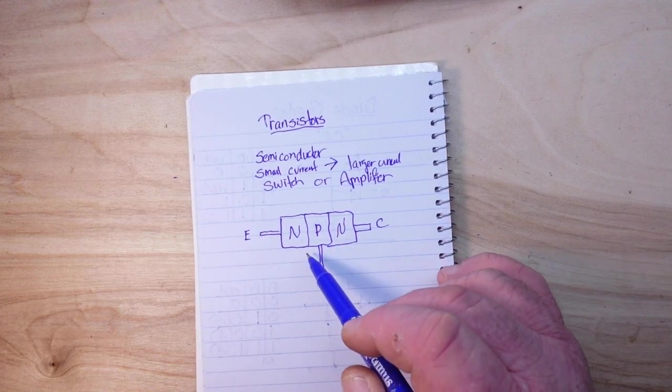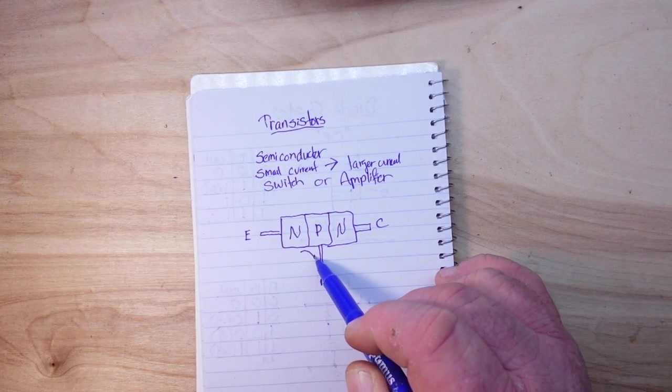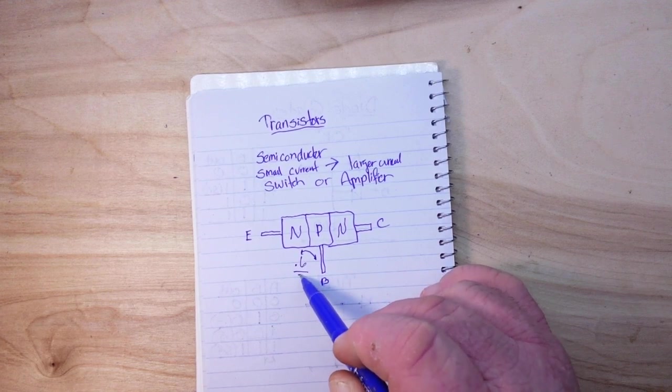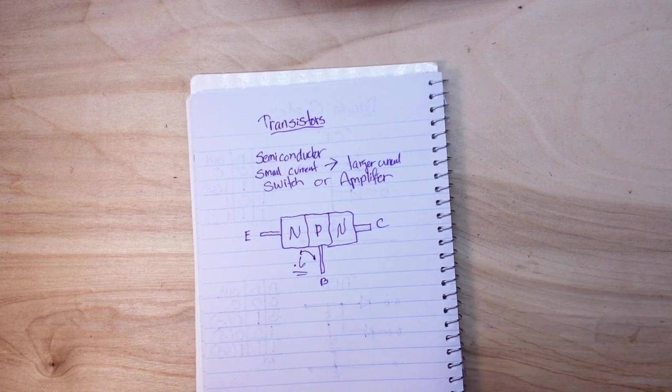So with a PN junction, we know there will always be a voltage drop of about 0.6 volts.